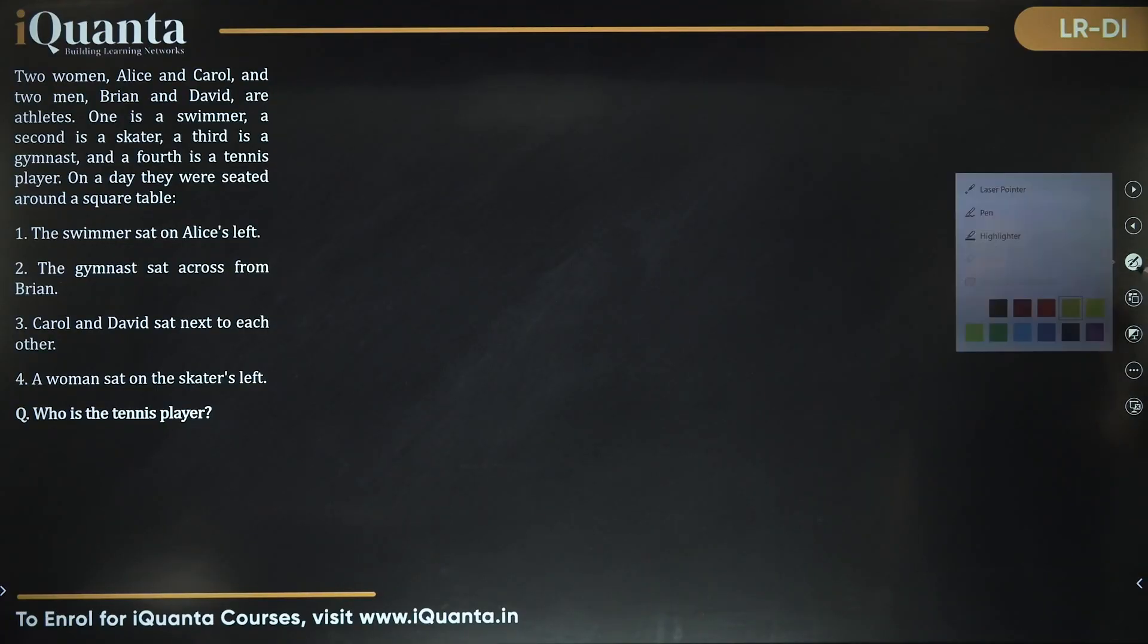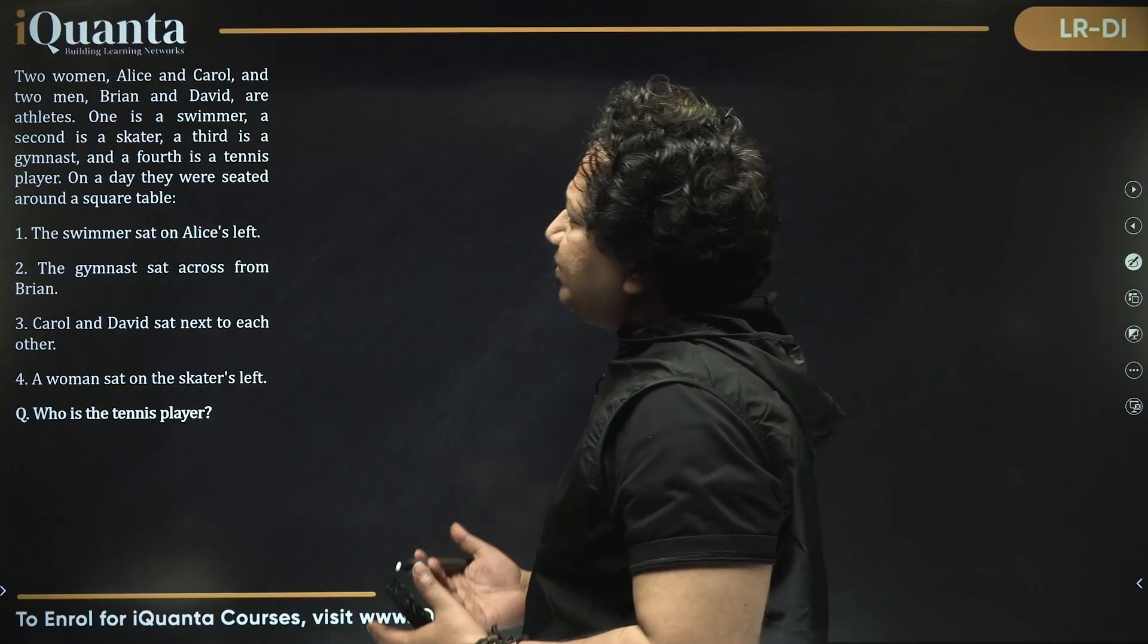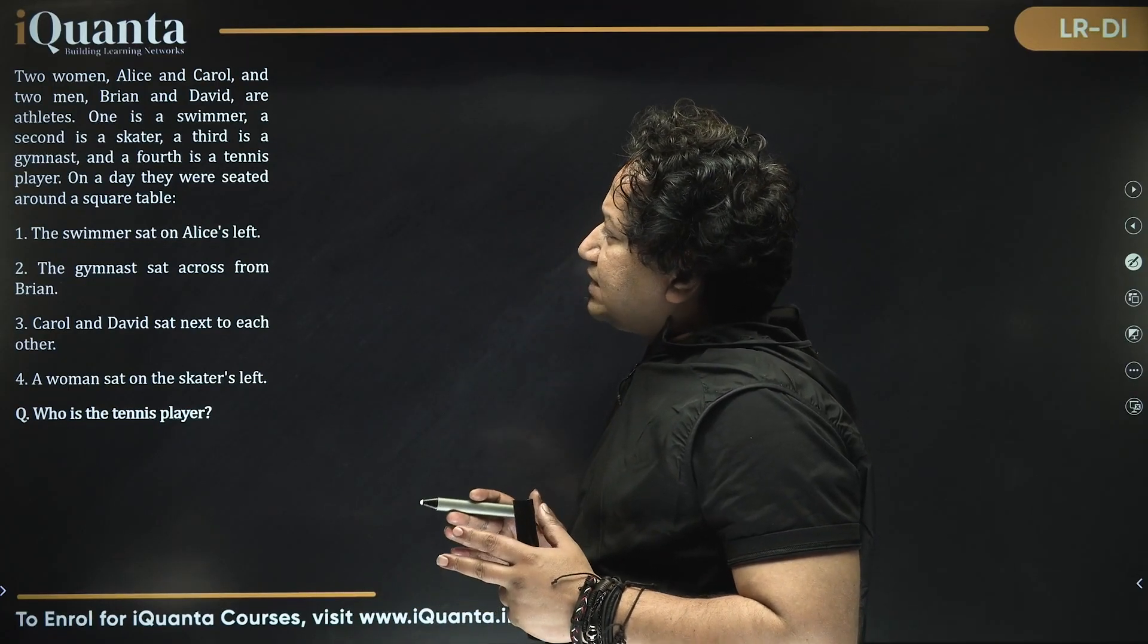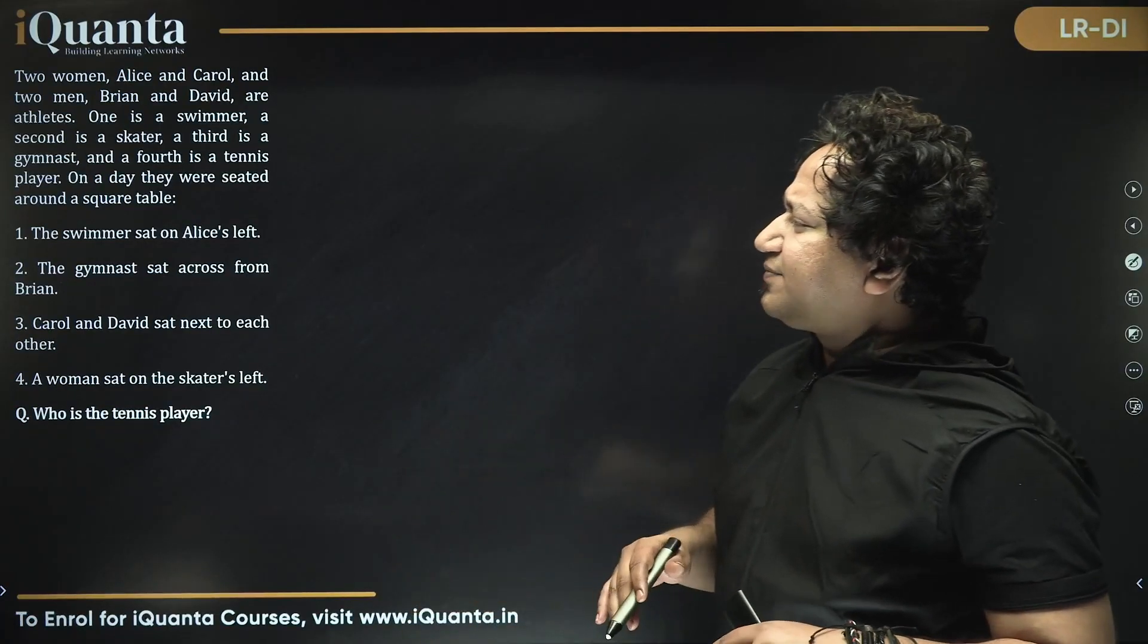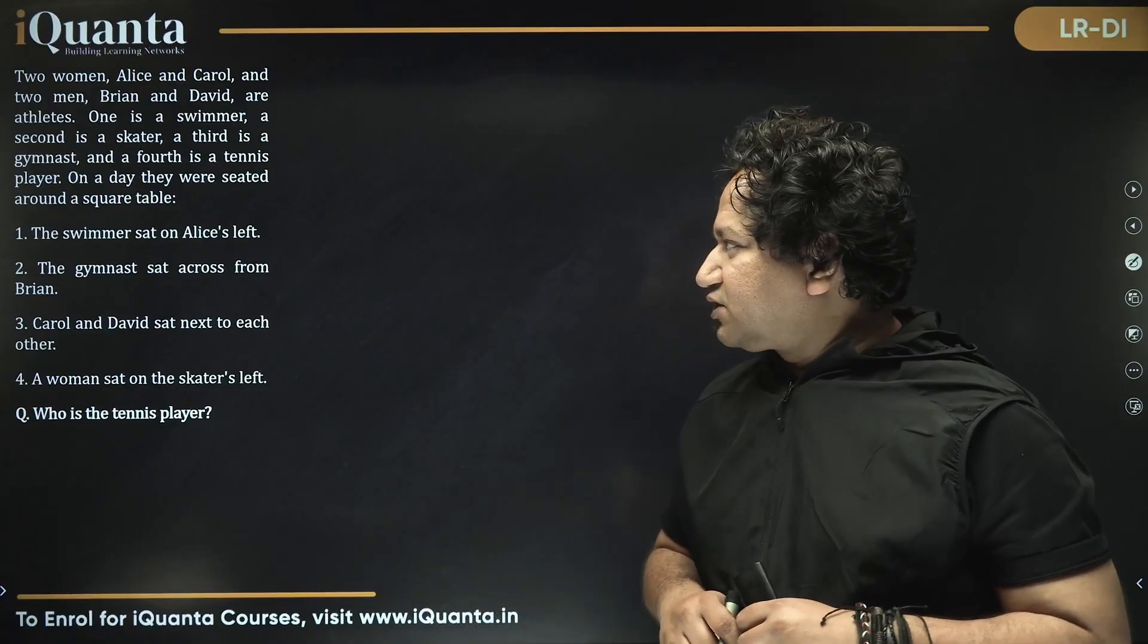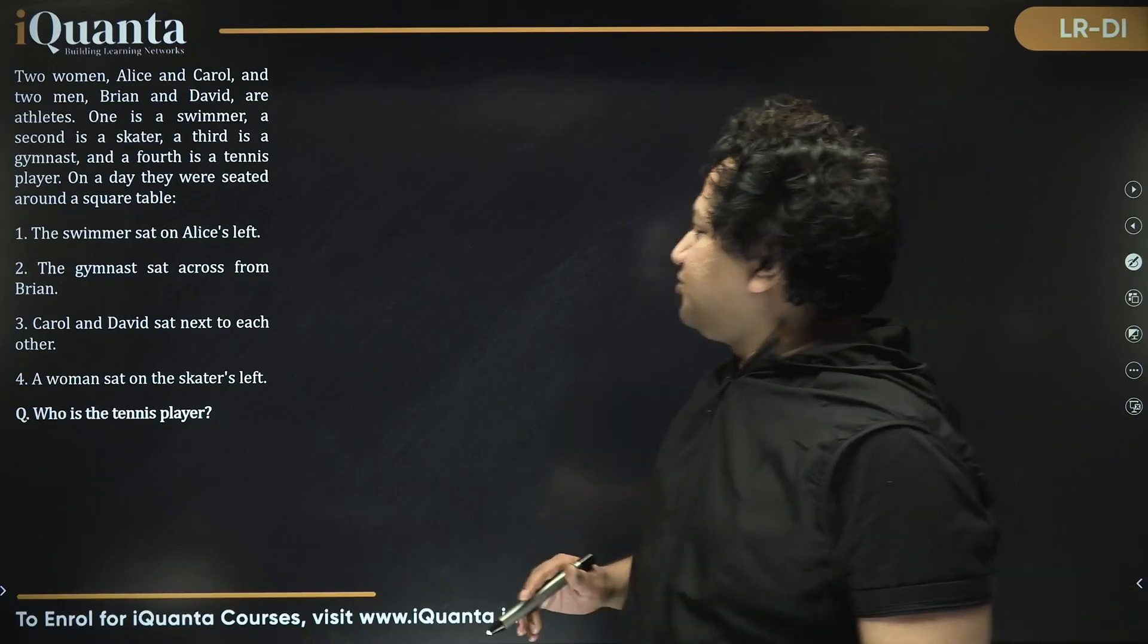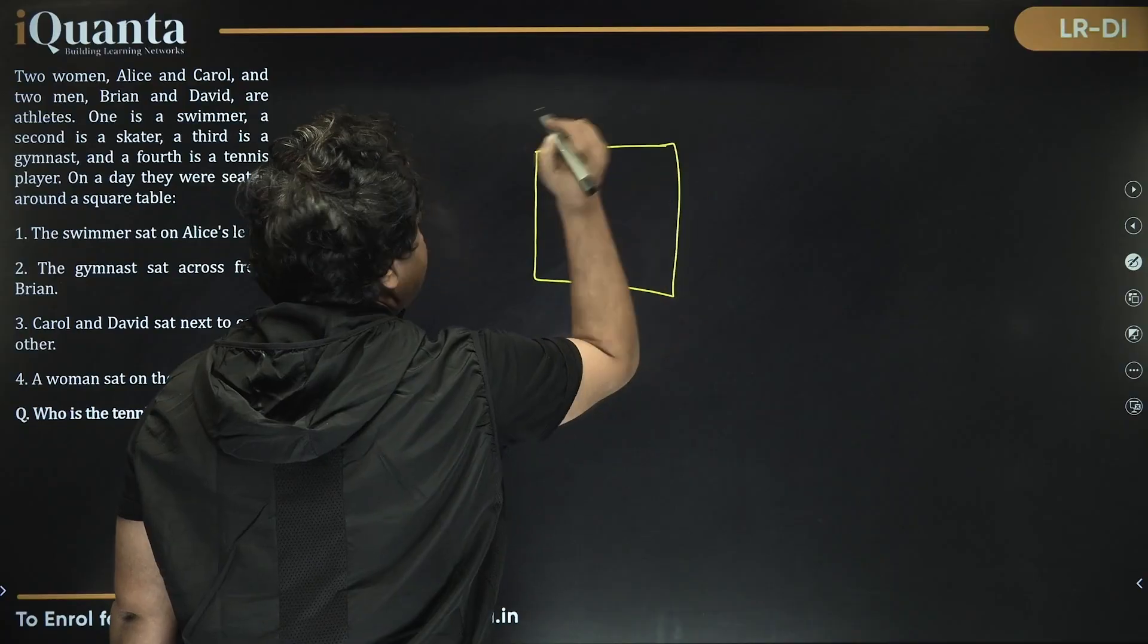Two women, Alice and Carol, and two men, Brian and David, are athletes. One is a swimmer, second is a skater, third is a gymnast, fourth is a tennis player. On a day they were seated around a square table. This is a classic case of sitting arrangement. So let us say this is the square table.